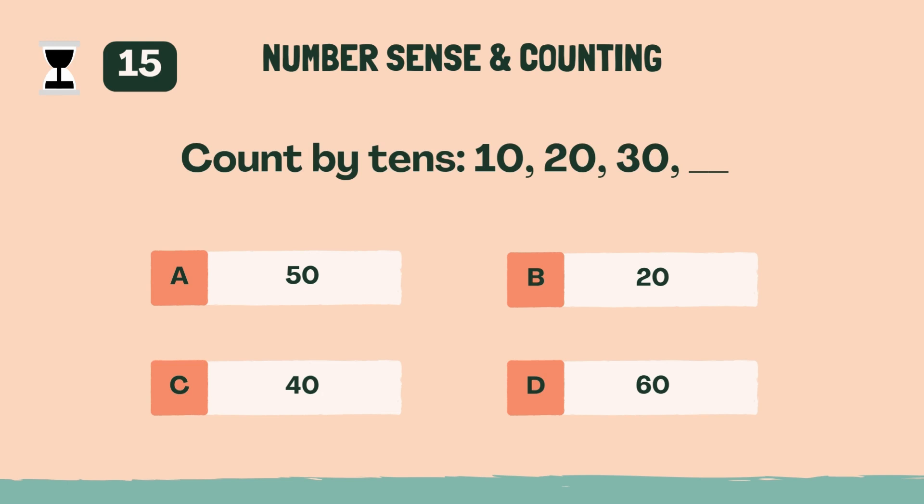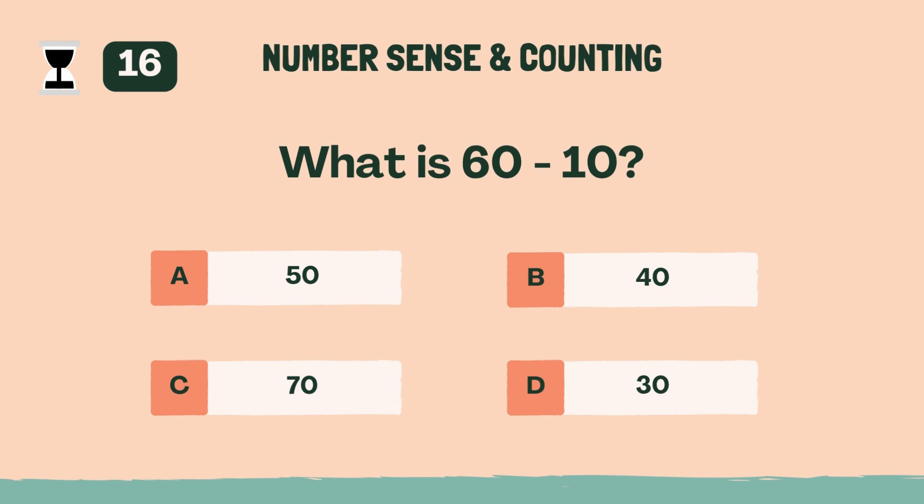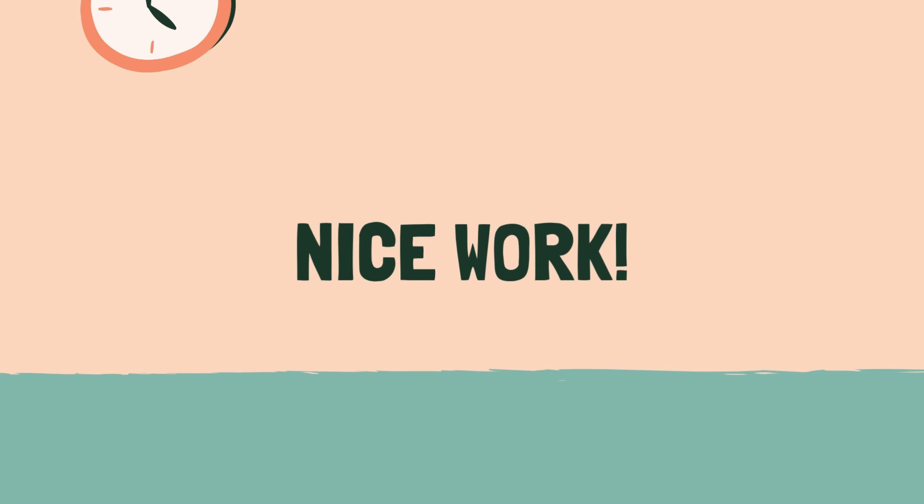Count by 10s. 10, 20, 30. C, 40. What is 60 minus 10? A, 50. Nice work. Time for the next category.